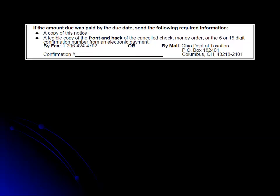Your non-remittance billing notice explains how to respond if you have already submitted a payment. If you have already made a partial or full payment that is not reflected on the notice, you will need to submit a copy of the front and back of the cancelled check or money order, or supply the electronic payment confirmation number.